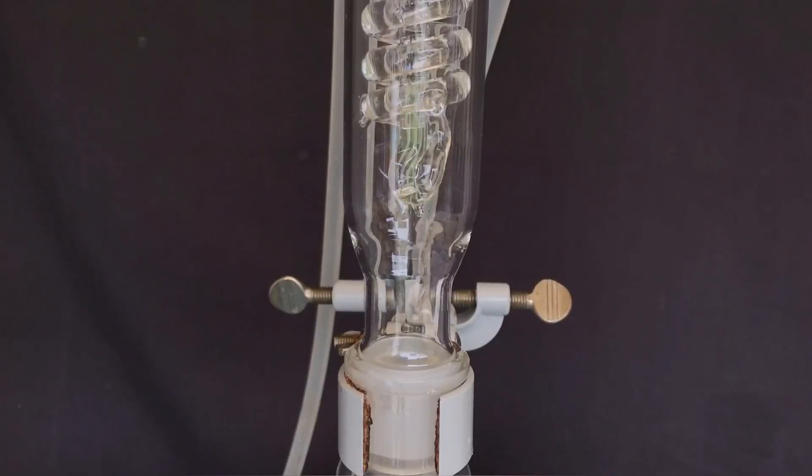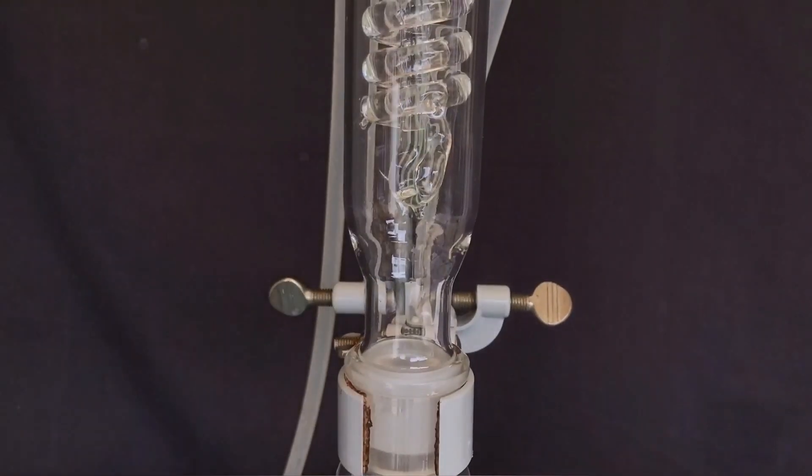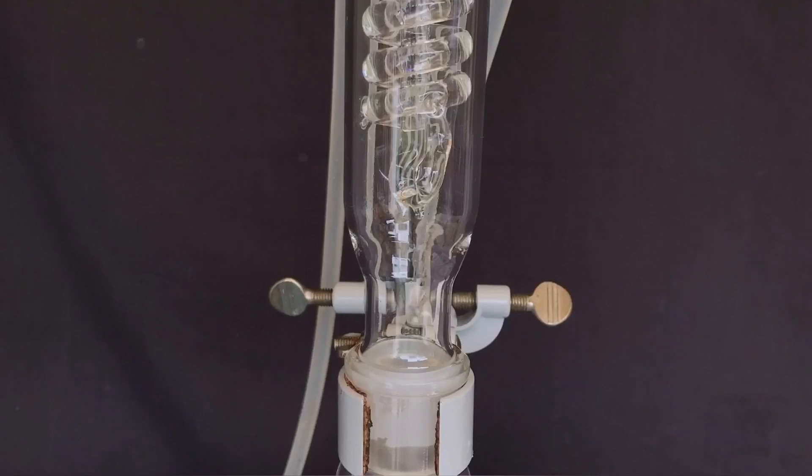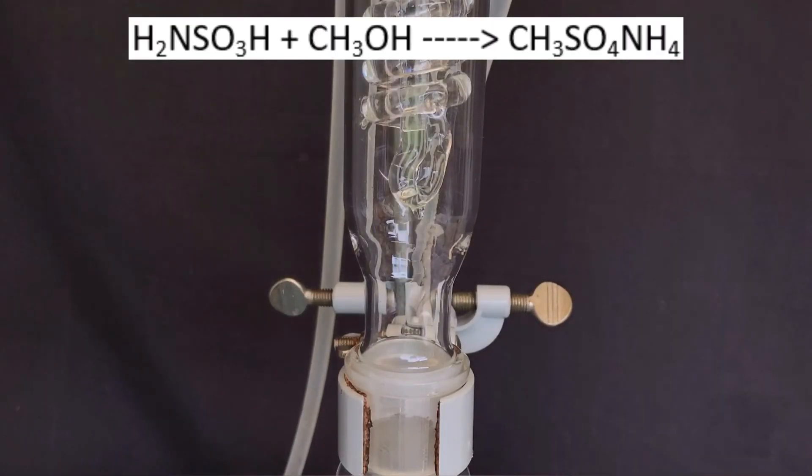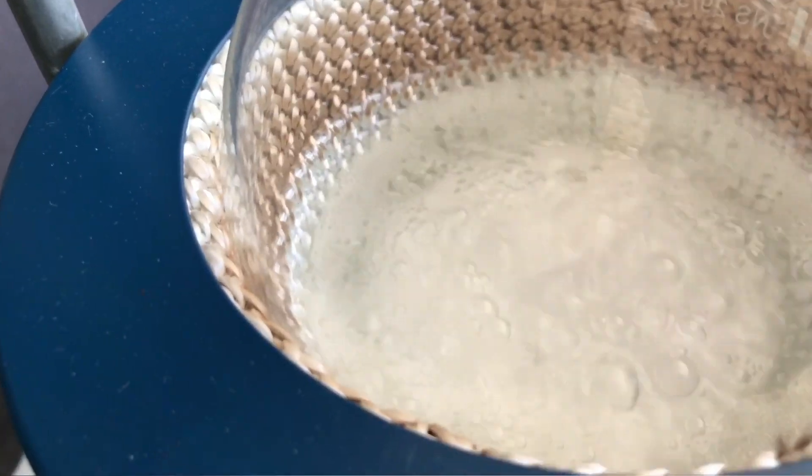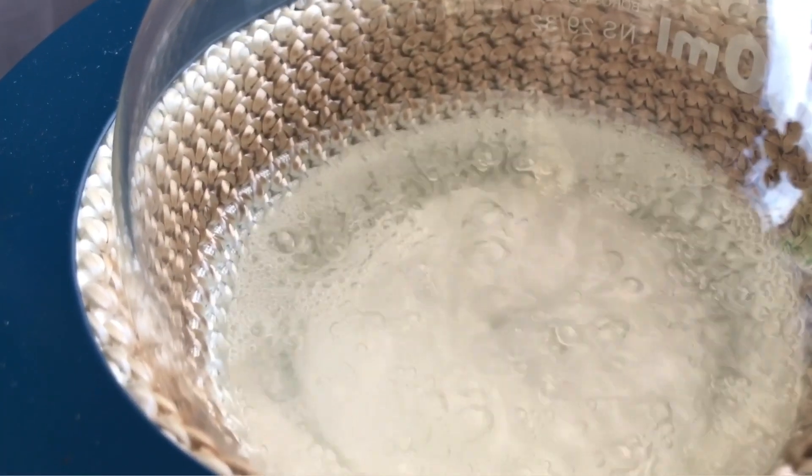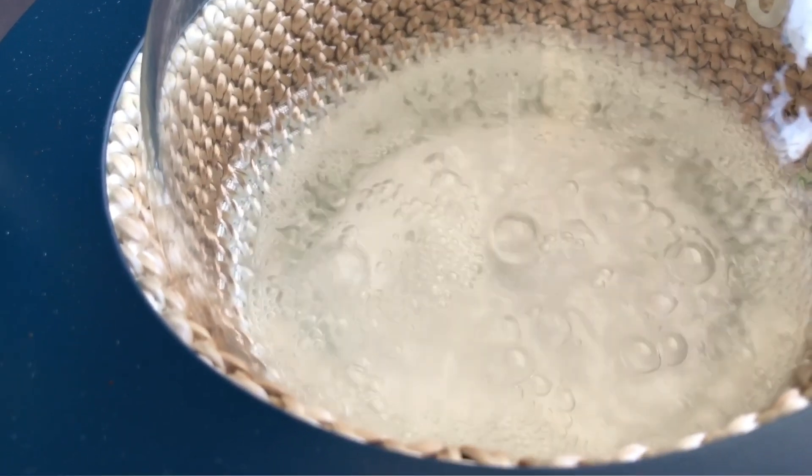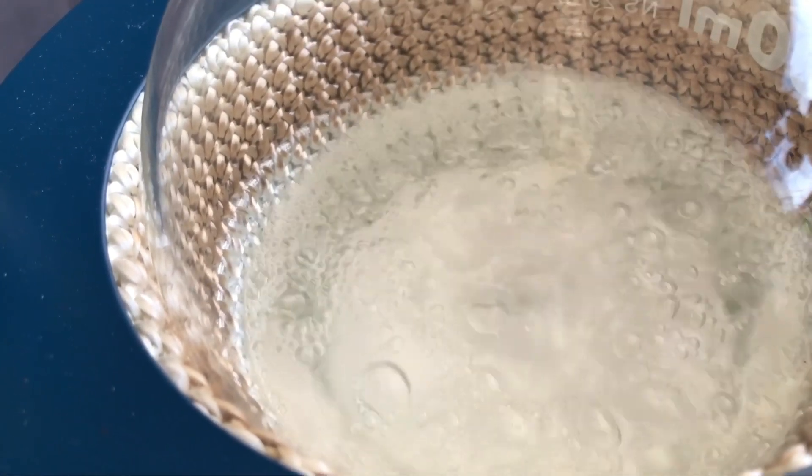Soon after turning on the heating mantle, we were able to see a beautiful vapor front of methanol climbing up the reflux condenser. The reaction taking place is the following: methanol reacts with sulfamic acid to form ammonium methyl sulfate directly.